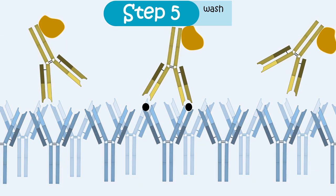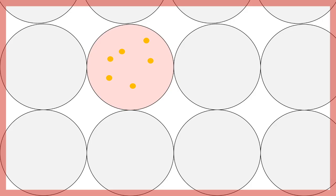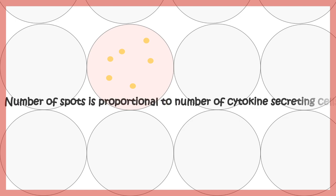Step 4 is to add secondary antibodies that are enzyme-linked. After adding them, another wash step removes unbound substances. These enzyme-linked secondary antibodies then evoke a chromogenic reaction, since they are bound to the captured cytokines. This produces specific spots on the microtiter plate. Each spot is indicative of one particular cell secreting that cytokine. Therefore, the number of spots is proportional to the cell density — the spot count directly reflects the number of secreting cells.